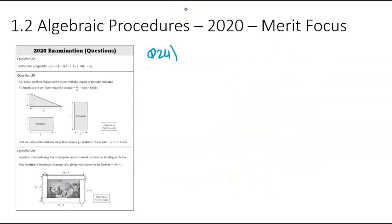To question number 24, a picture frame using four rectangular pieces of wood as shown in the diagram. So these are here that rectangular wood and there's my picture kind of sitting in the middle. Find the area of the picture in terms of x and give your answer in that form there. So what that's saying is that's saying the expanded form. So we're going to need to expand our answer so it probably means we're going to have some double brackets. We then expand it.